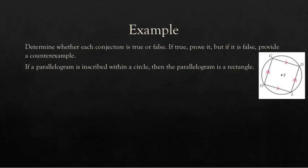Opposite angles in a parallelogram are always congruent — that's from our parallelogram conjectures. For a cyclic quadrilateral, a quadrilateral inscribed in a circle, opposite angles are supplementary. So these congruent angles are also supplementary. That means they must both be 90 degrees: if two congruent angles add up to 180, each must be 90. If that's true for angles O and D, it would also be true for G and L, giving us four right angles — which means we have a rectangle.